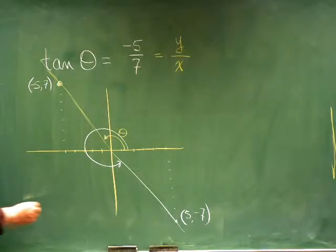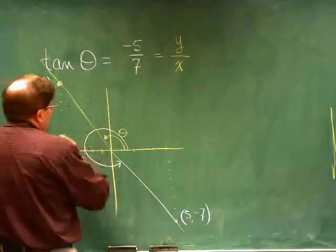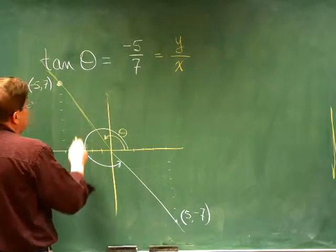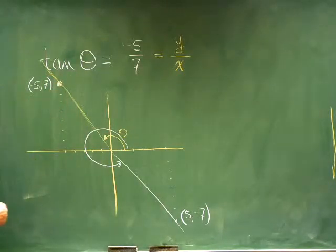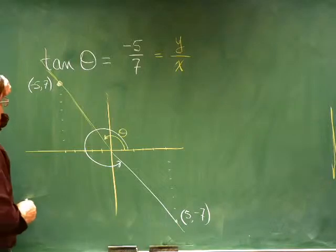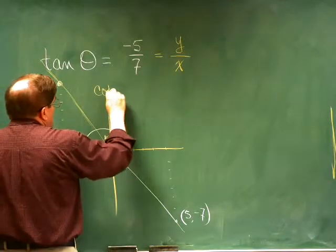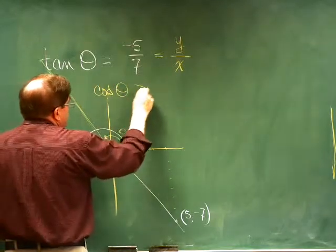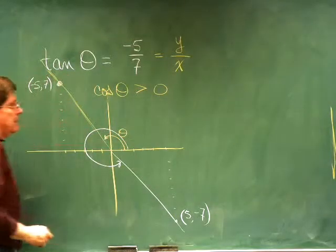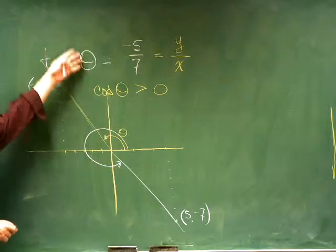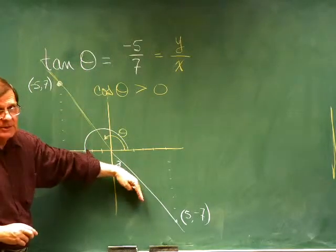Suppose we were told then that maybe in addition to knowing that the tangent of theta is equal to negative five-sevenths, we were also told that the cosine of theta happens to be positive. A combination of those two says that it would have to be this case right here.